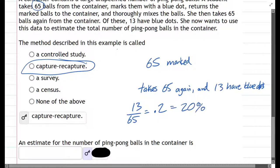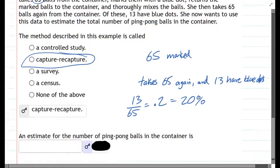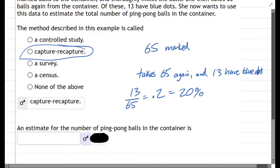So when we reach back in and grab 65 out, 20% of them had marks on them, which means that approximately 20% of the total number of balls are marked. 20% of the total balls are marked.